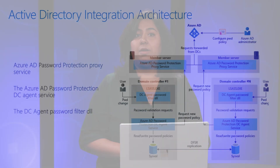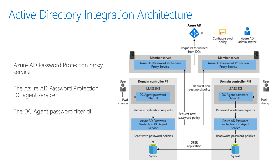There are three main components to the on-prem deployment. First, the proxy service. Second, the DC agent. And third, the password filter DLL.